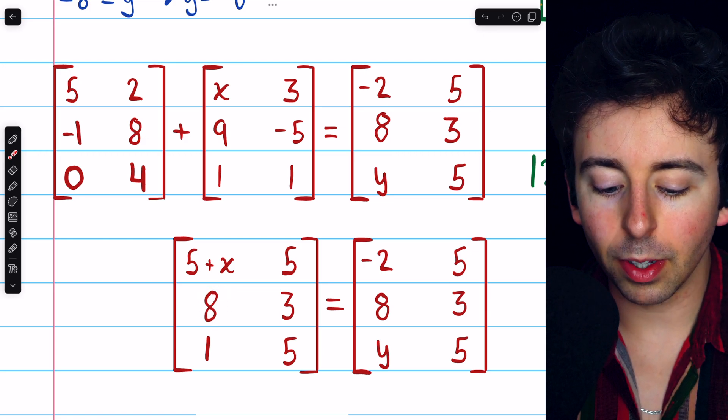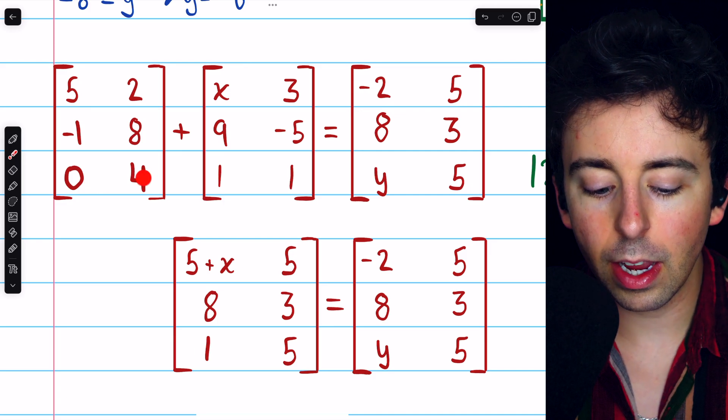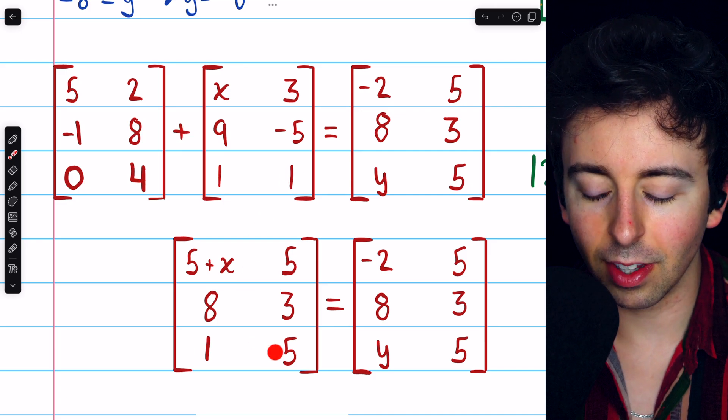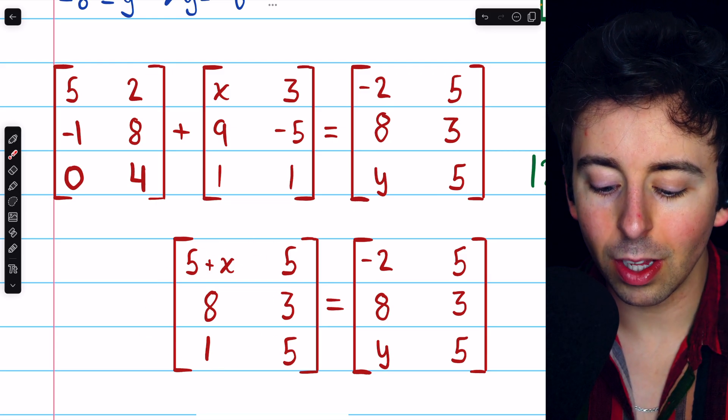8 plus negative 5 gives us 3. 0 plus 1 gives us 1. And 4 plus 1 gives us 5. So we see that this matrix must equal this one.